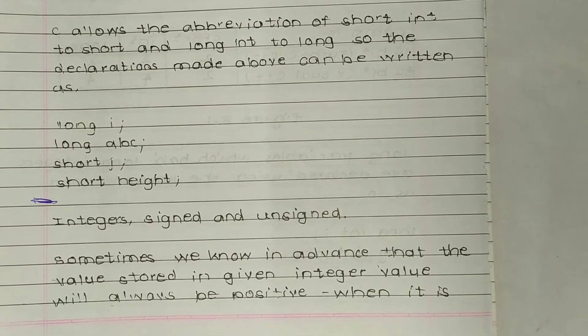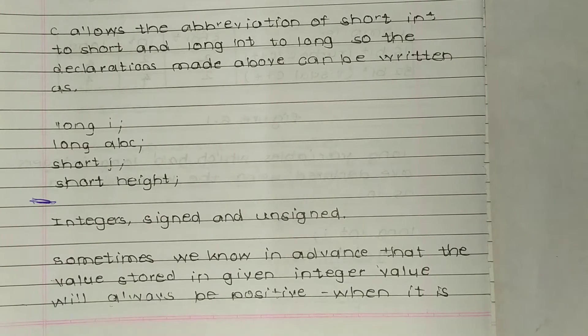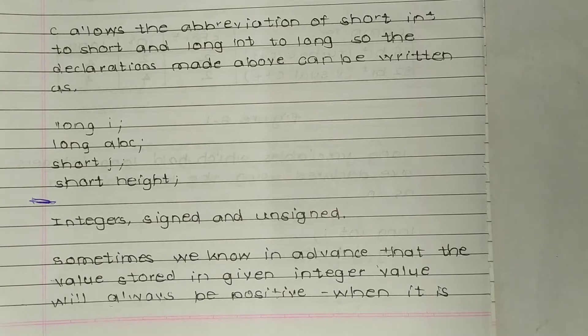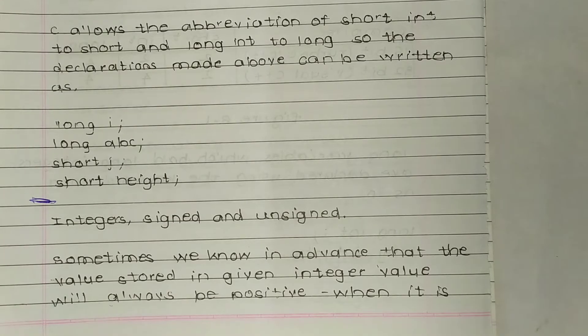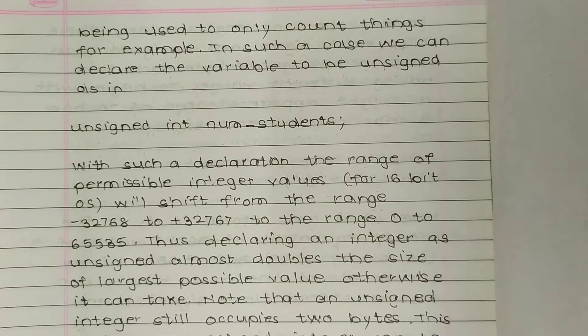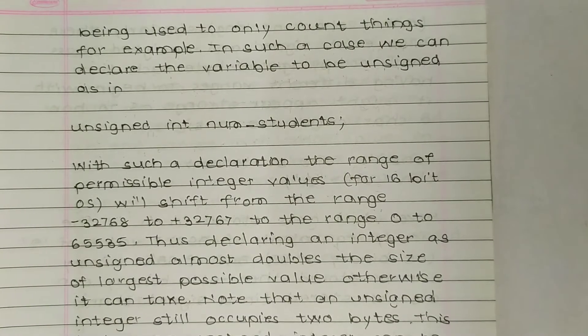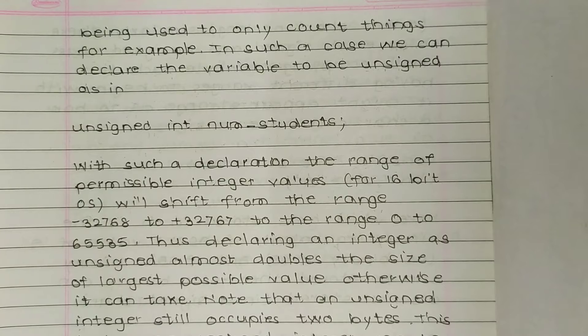Integers signed and unsigned. Sometimes we know in advance that the value stored in a given integer variable will always be positive. In certain situations we know that value is negative or positive, being used to only count things, for example. In such a case we can declare the variable to be unsigned, as in unsigned int num_students.